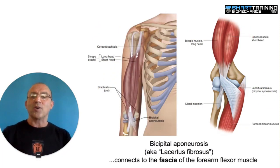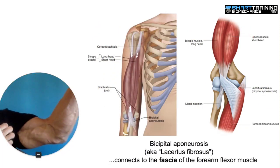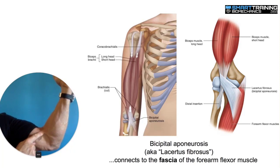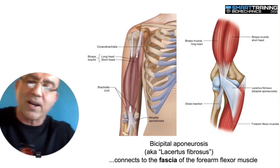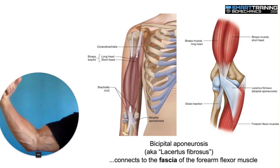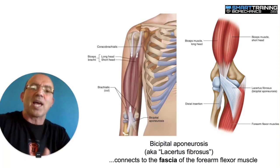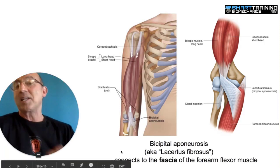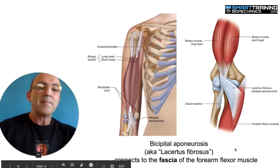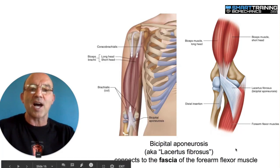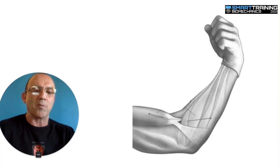On my left arm you'll see that little thing right there, which is the aponeurosis, and over here I don't have it. It's just a little piece of fascia — it isn't a tendon because tendons connect to bones.